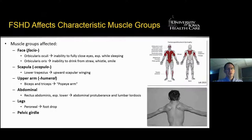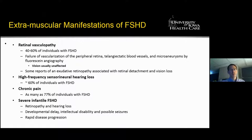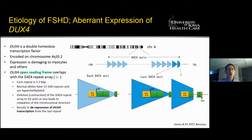FSHD affects characteristic muscle groups. In particular, facial muscle weakness is one of the predominant signs, and another typical finding is with the lower trapezius and the development of upward scapular winging. There are also extra-muscular manifestations with retinal vasculopathy, sensorineural hearing loss, and chronic pain. In severe infantile FSHD, there is usually retinopathy, hearing loss, developmental delay, intellectual disability, seizures, and more rapid disease progression.